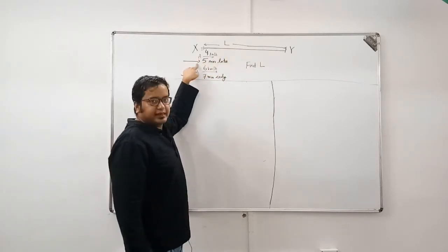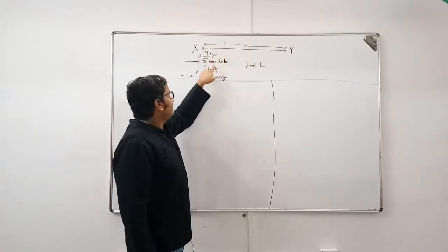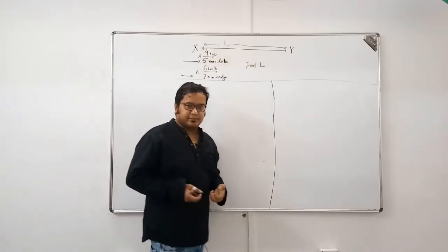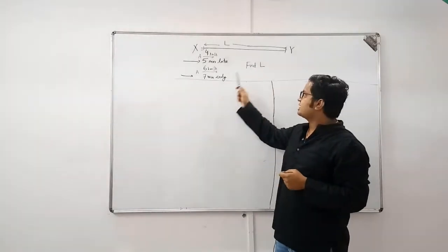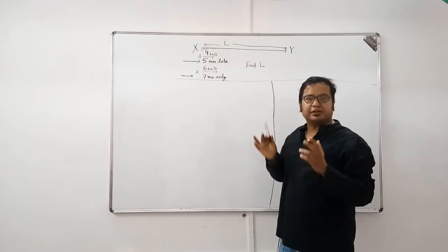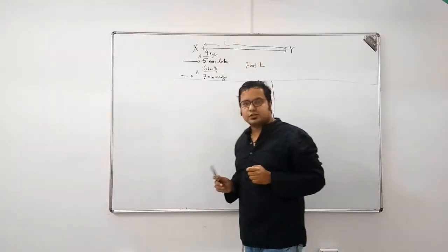When A starts from X with a speed of 4 km per hour, he reaches 5 minutes late from his usual time. When A starts with a speed of 6 km per hour, he reaches 7 minutes early. This is the given information. You need to find out the length of this journey X to Y.